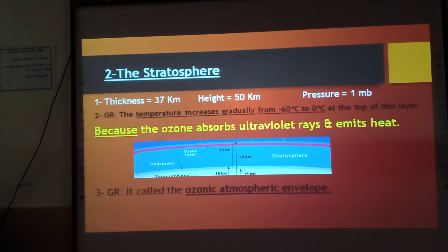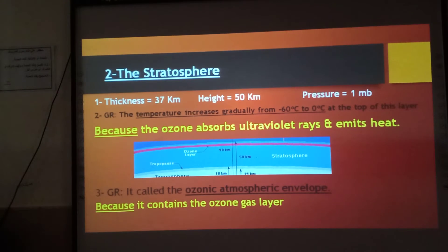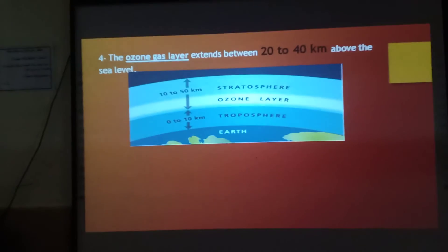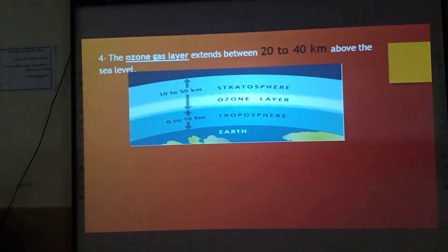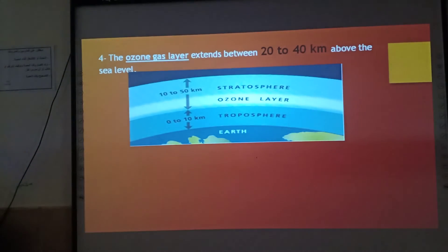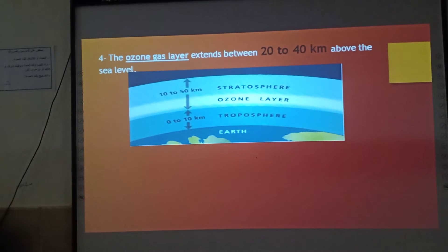The stratosphere is called the ozonic atmospheric envelope because it contains the ozone gas layer. The ozone gas layer extends between 20 to 40 km above sea level.